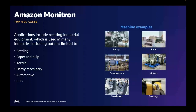Here are some top use cases for Amazon Monitron and examples of machines it can be used with. Monitron's end-to-end system can be used to enable predictive maintenance for all kinds of rotating machinery in production lines and warehouses. Bearings, gearboxes, motors, pumps, compressors, fans, and generators are all common examples of machines or machined parts that Monitron supports.